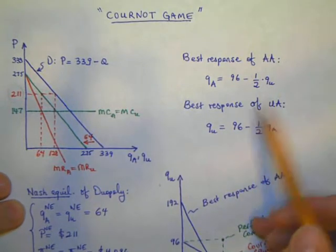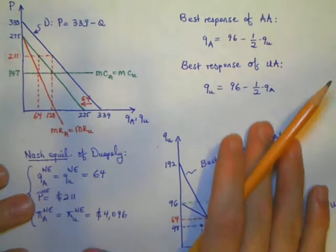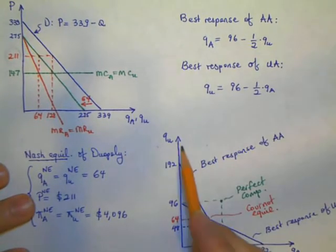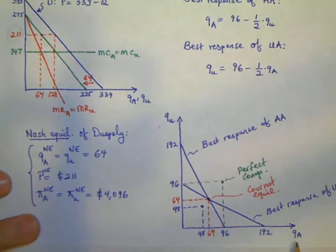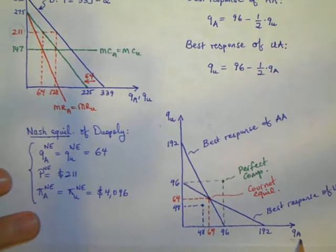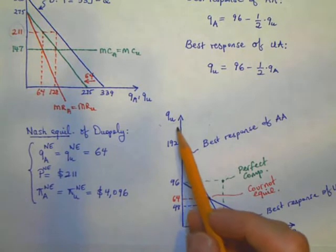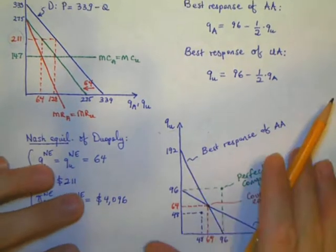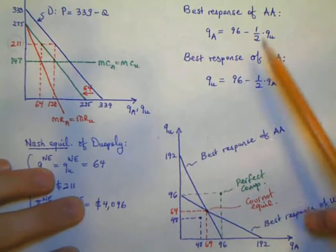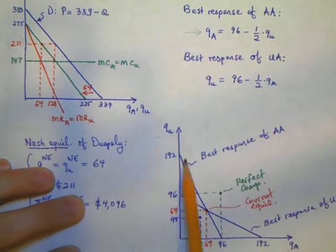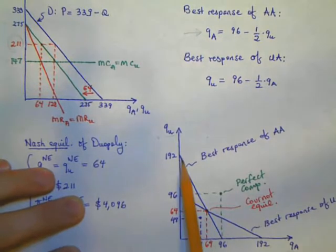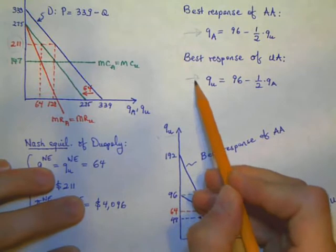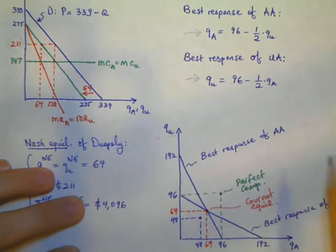Given these best responses, it's possible to draw them on a quantity-quantity space. I have the output choices of American Airlines on my horizontal axis and the same quantities for United Airlines on my vertical axis. Given that the best response of American Airlines is given by this equation, I plot it here. Similarly, it's possible to make a similar drawing for United Airlines, and that would be the best response of United Airlines.